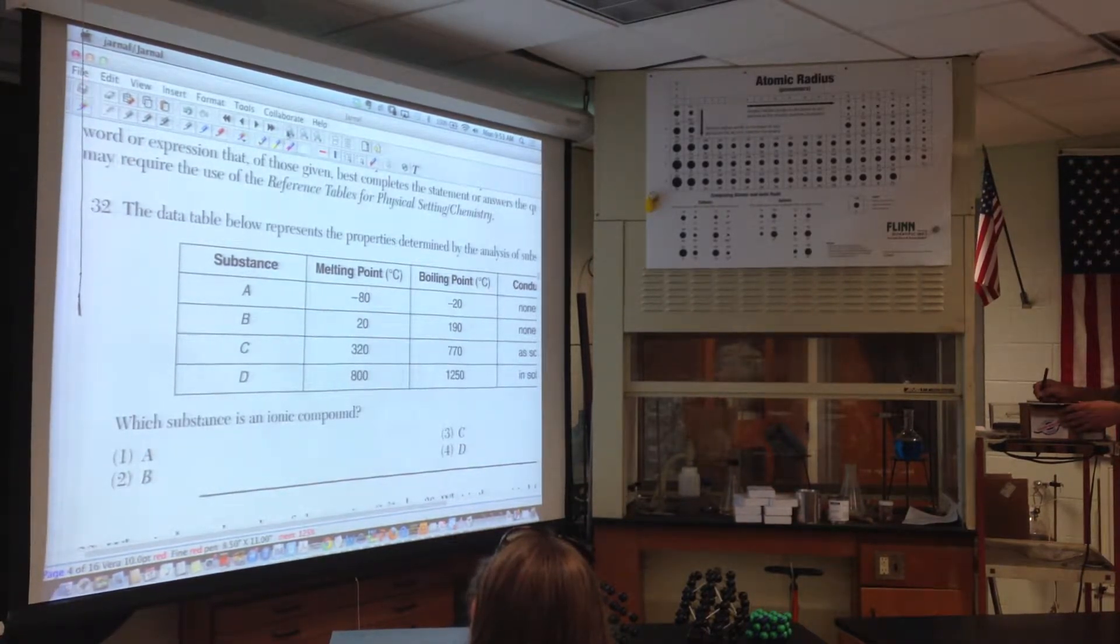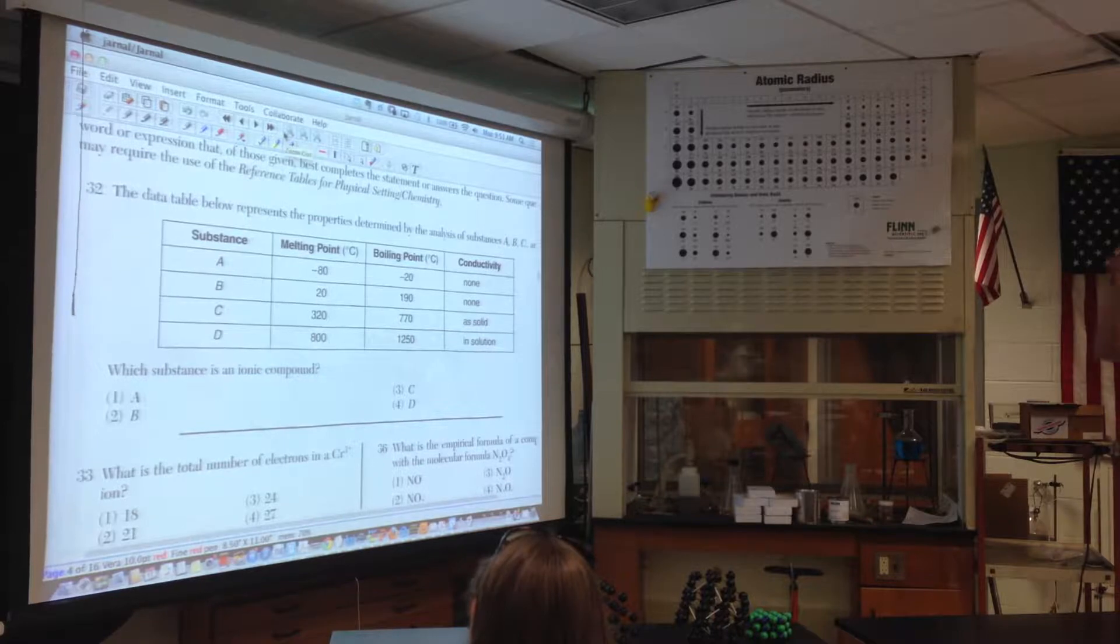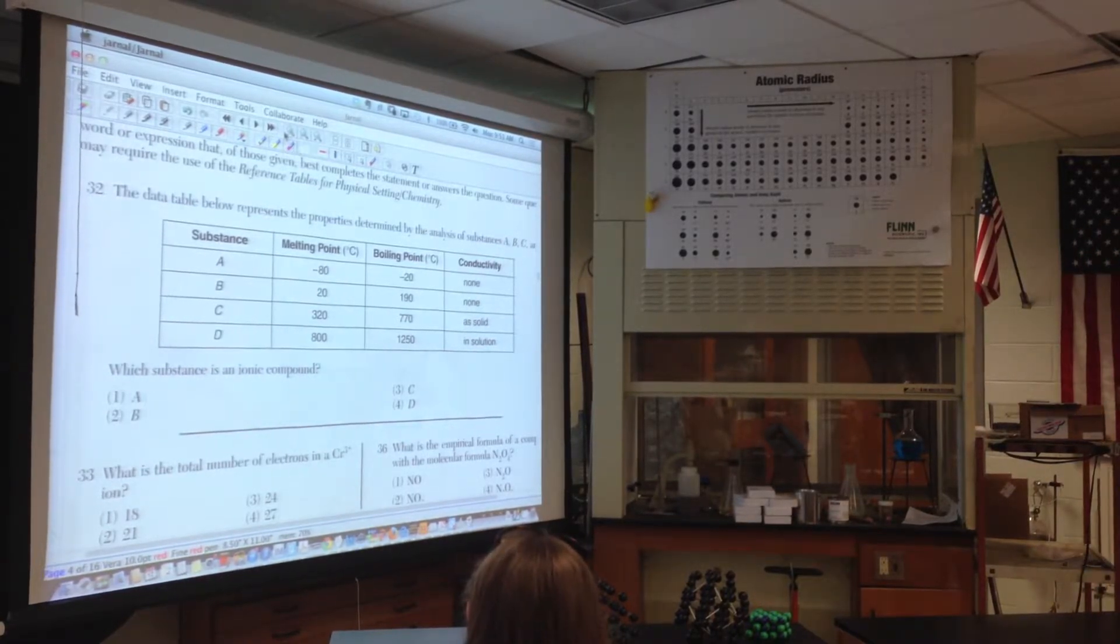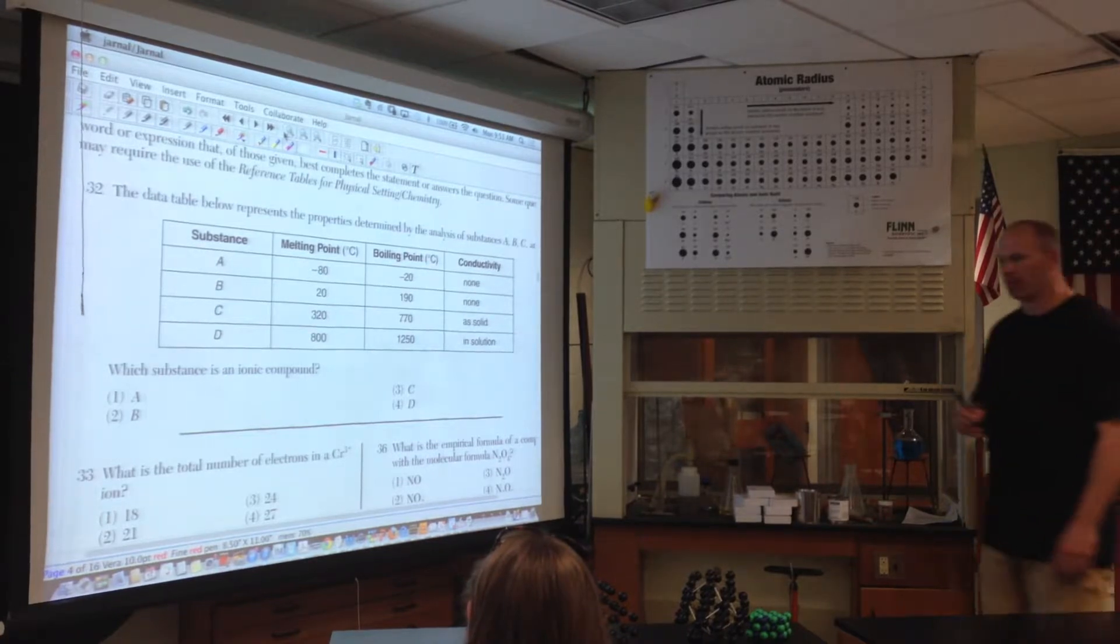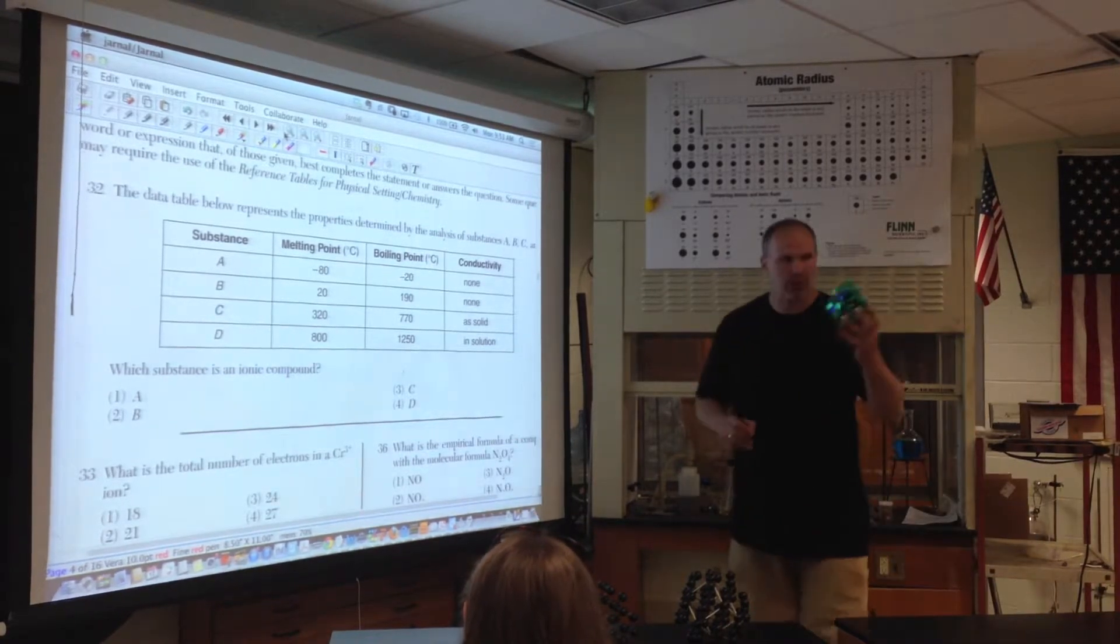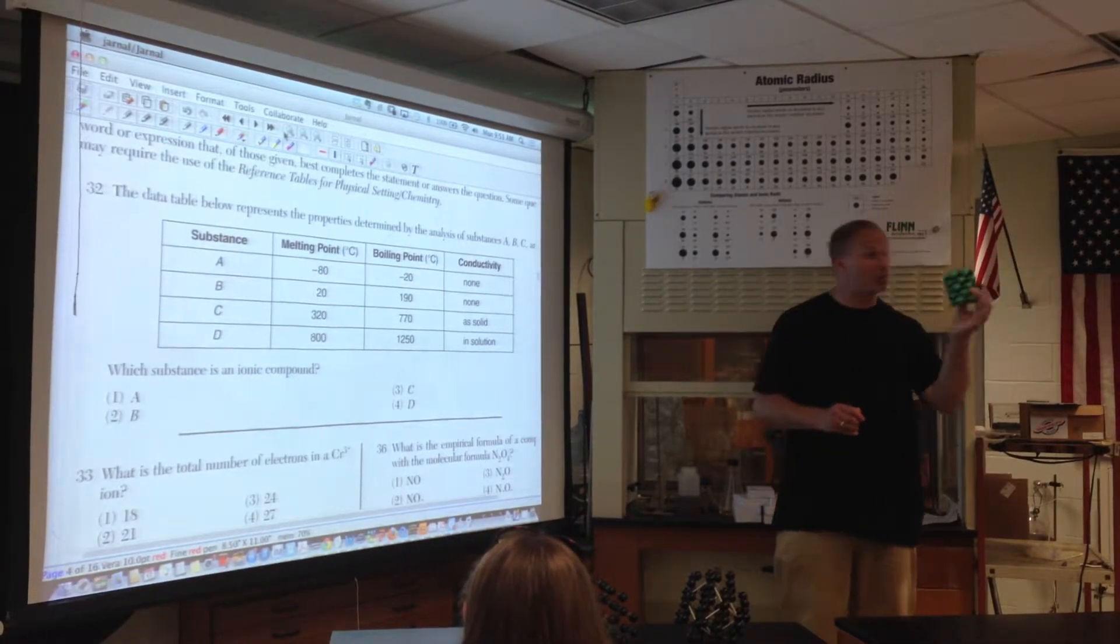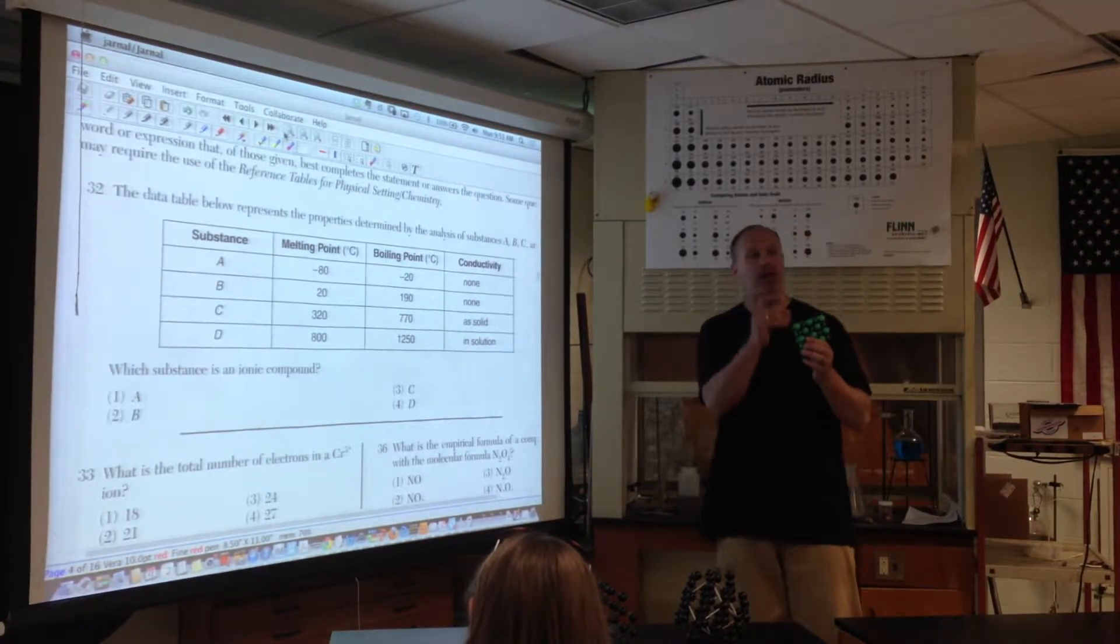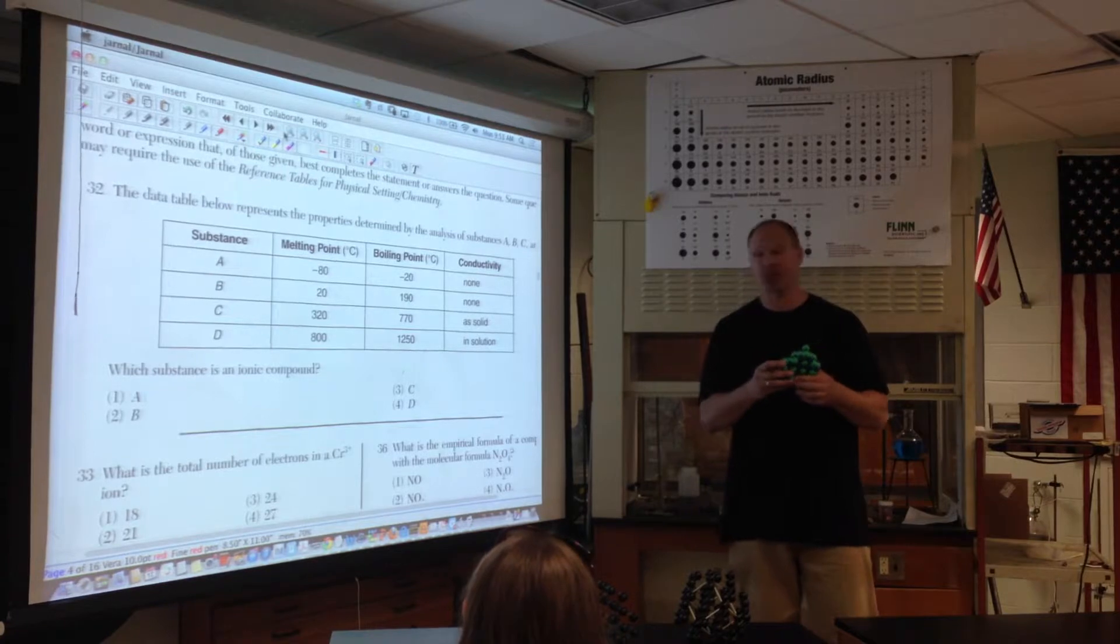The data table below represents properties determined by the analysis of substances A, B, C, and D, which substances are an ionic compound. An ionic compound does not make molecules, it makes crystals, is a repeating arrangement of ions, metal, non-metal, or anything that's positive and negative.